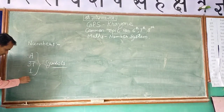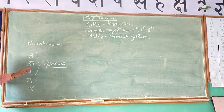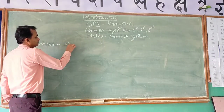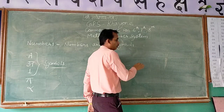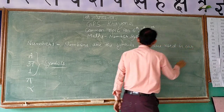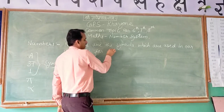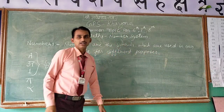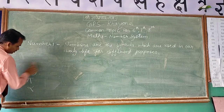Similarly, we can say that numbers are symbols. These are symbols, and they have a special value. So, the definition is: numbers are symbols which are used in our daily life for different purposes. I hope you are clear about numbers.